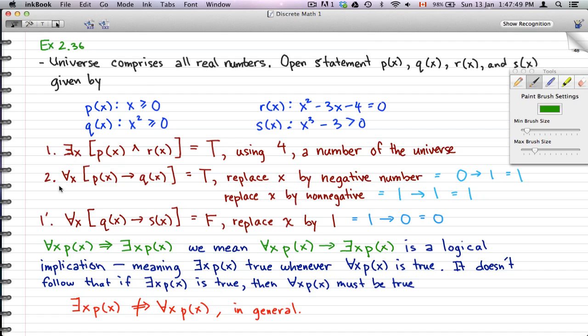Now, number 2, for all x, Px implies Qx. Now, what we want to do here is, again, we want to just take a random number from the universe of all real numbers, for example. And, for example, what I have here is replace x by a negative number, that will give us true, or replace x by a non-negative number, and that will also give us true.